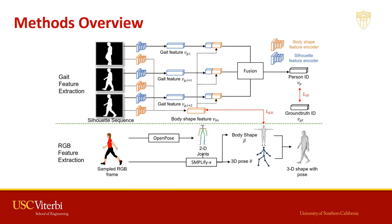We present our method with two feature extraction branches for silhouette and RGB images respectively. The RGB feature extraction branch is only used during training when the corresponding image of the person is available.